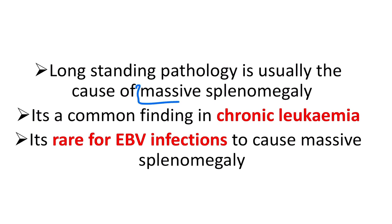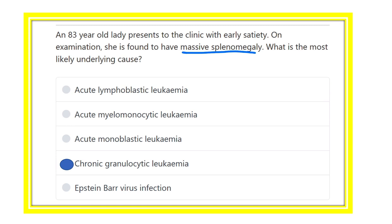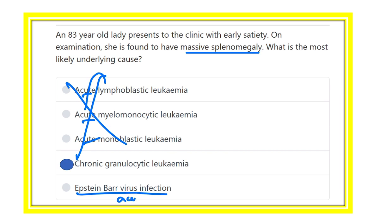Massive splenomegaly requires a long-standing or chronic disease. It is a common finding in chronic leukemia, such as chronic granulocytic leukemia. It is rare in Epstein-Barr virus infection, where splenic rupture may occur but massive splenomegaly is uncommon. Therefore, ruling out all acute conditions and EBV, the answer is chronic granulocytic leukemia.